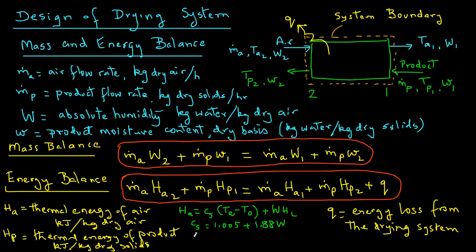And the heat content of the product, H_p, can be calculated by knowing the specific heat of the product, we will call it C_pp, times T_p, which is the temperature of the product, minus T_0, plus the moisture content of the product times the specific heat of water, times (T_p minus T_0). Note that T_0 in these two equations equals zero degrees. That is our reference temperature.